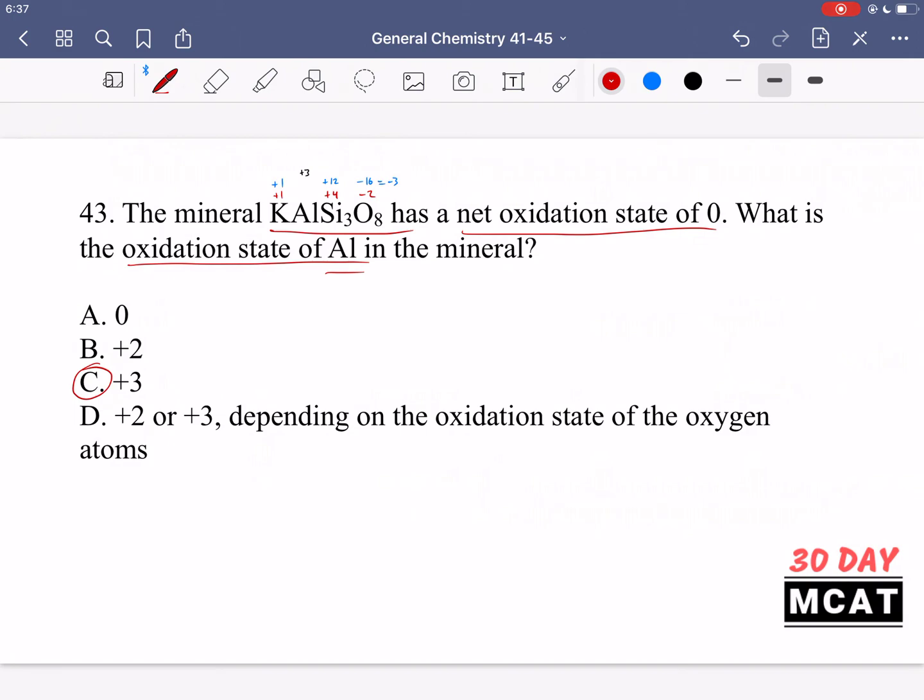So C is a correct answer it's plus 3 it's not A or B. D is saying plus 2 or plus 3 depending on the oxygen state of the oxygen atoms oxidation state of those atoms well no that's incorrect this is assuming that those are going to change. No in this case you should know that it's going to be minus 2 for oxygen overall giving it a minus 16 oxidation state so it's just going to be plus 3 it's not changing between two numbers.